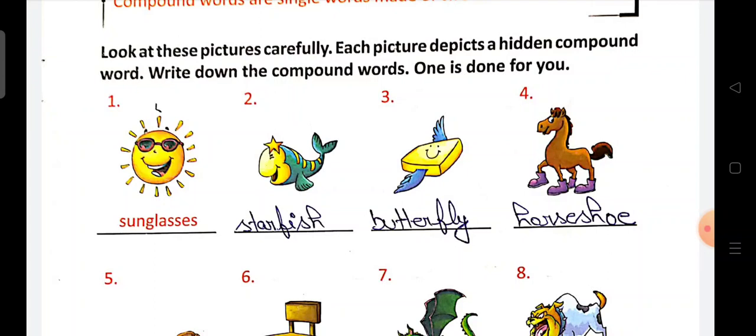So first one is done for you - sunglasses. Sun ki picture hai, usne glasses lagaye huye hai, so that means sunglasses. Next, number two, fish. Fish ke eyes ke paas kya hai - star, toh ye hoga starfish.